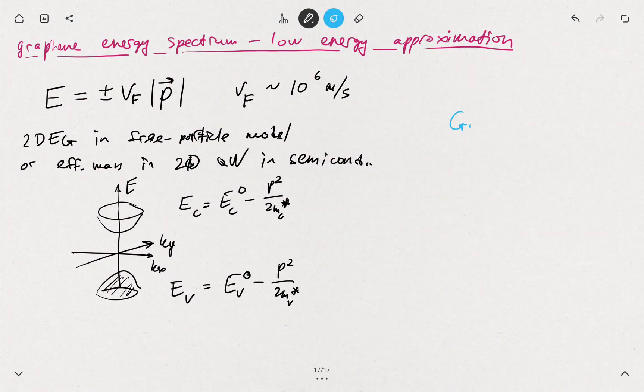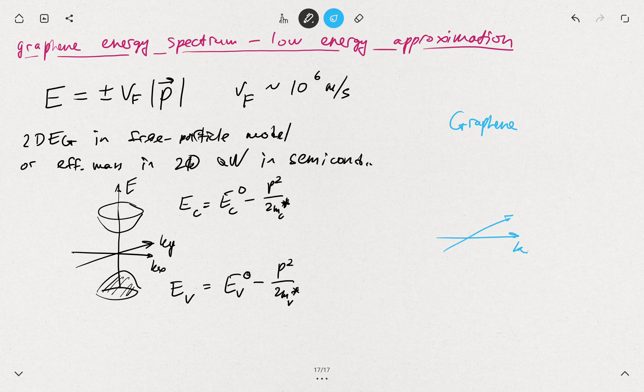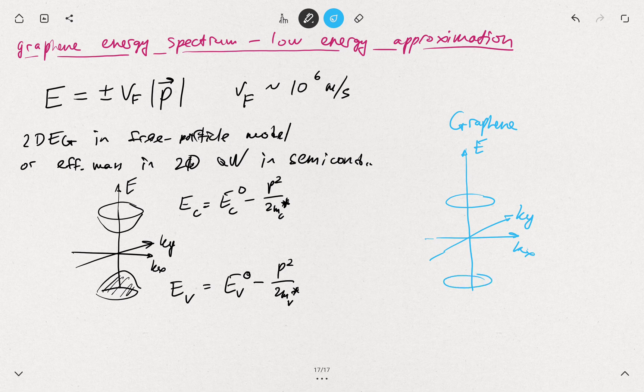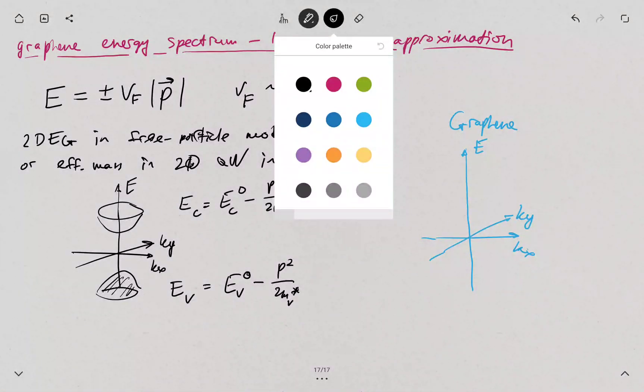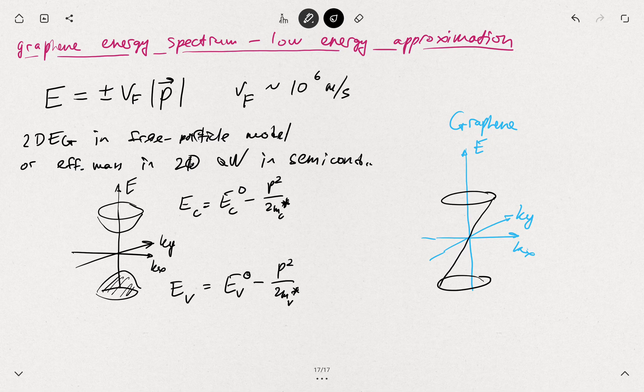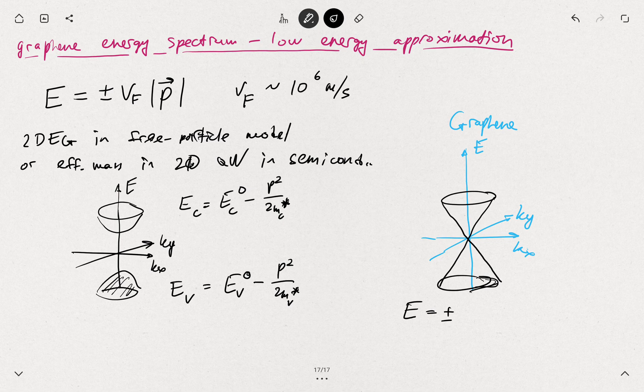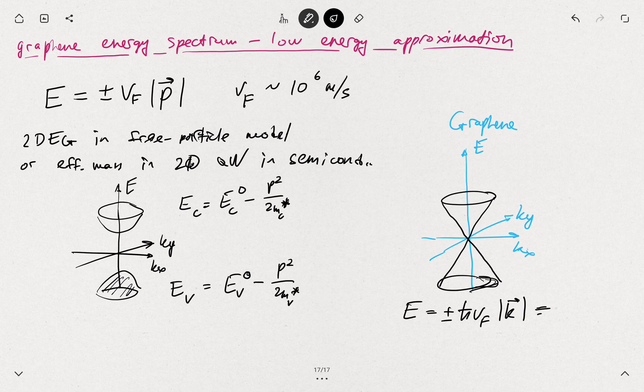And in the case of graphene, if we draw the same kx, ky, this is the energy scale, we have these famous Dirac cones. We have a linear dispersion relation, the conical behavior, so the energy spectrum is plus or minus ℏvFk, same as plus or minus vFp.